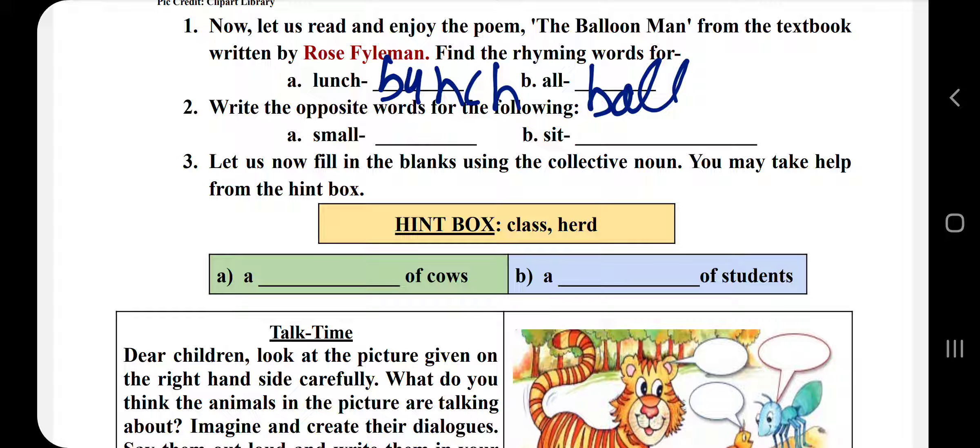Write the opposite word of the following: small, opposite is big. Small means big. Sit, opposite is stand. Stand means stand.